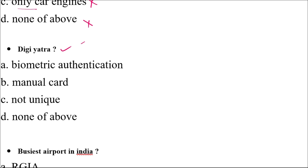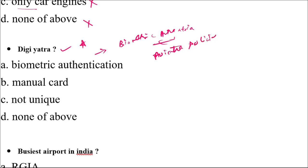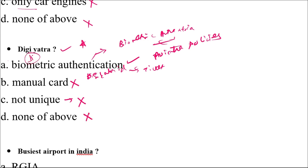DigiYatra is basically a biometric authentication of passengers, discussed in the chapter on aviation policies. There is no need to carry a physical ticket — passengers can enter the airport and access other areas using biometric authentication with their DigiYatra ID. There is no manual card; everything is automatically identified. It does have a unique ID, so that option is also not the answer. DigiYatra is based on biometric authentication.